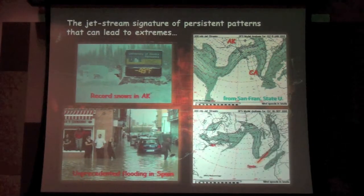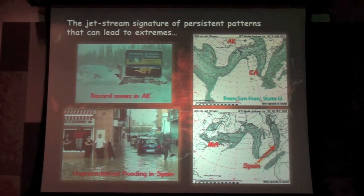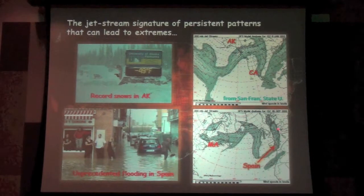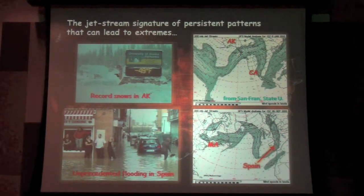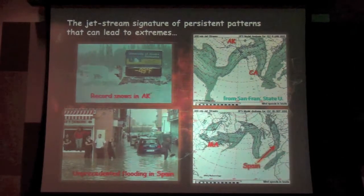That flooding event in Spain I showed you, same kind of a situation. Here's Spain, here we are over in Detroit here, again, a very wavy jet stream bringing a lot of moisture in from the Atlantic right into Spain. And both of these patterns were in place for weeks.